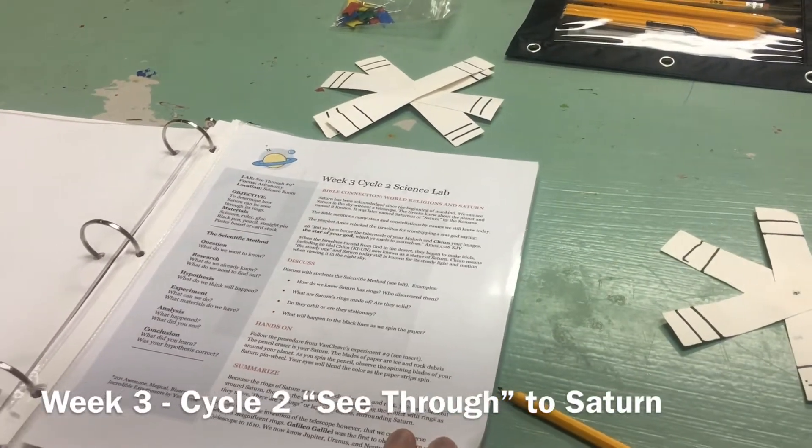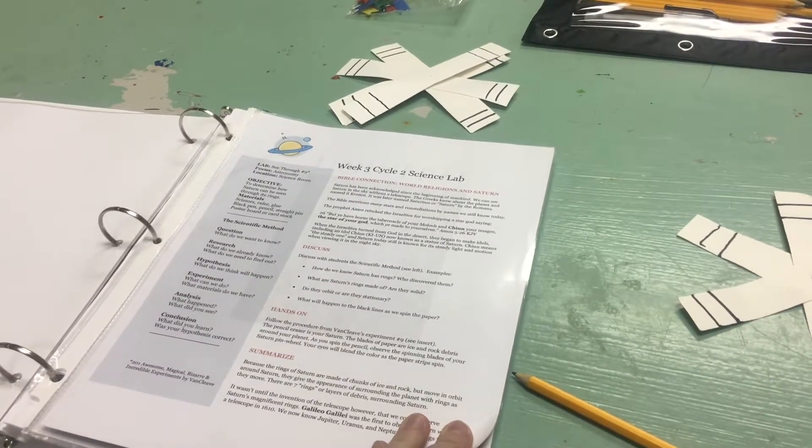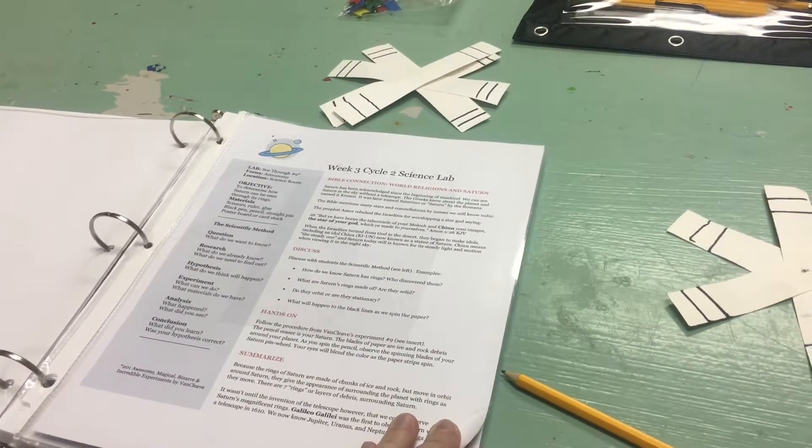So for this experiment, See-Through Number Nine from Van Cleef's book, we are going to be determining how Saturn can still be seen through its rings.